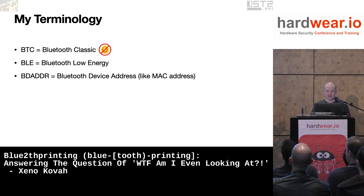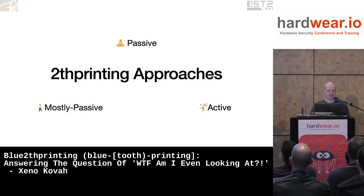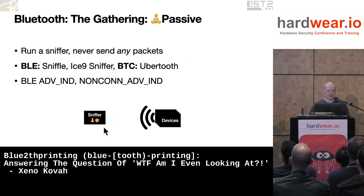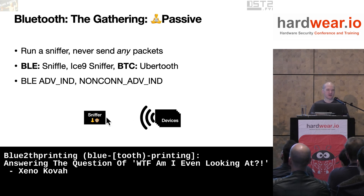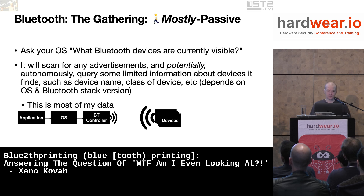My terminology for this talk: BTC stands for Bluetooth Classic, not Bitcoin. BLE is Bluetooth Low Energy, and BD Address is a Bluetooth device address — think of it like a MAC address. When it comes to tooth printing, what are the different ways we can do it? There's the passive way where you just run a sniffer and devices may just be sending out advertisement packets all the time, so you're not going to be visible to anyone. But most of the time the information devices are spewing out is not sufficient to tooth print them.